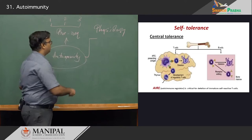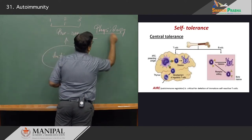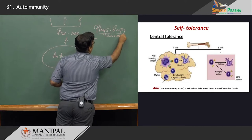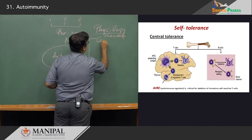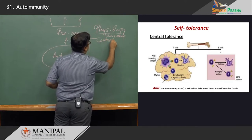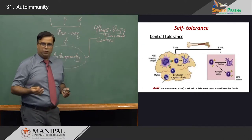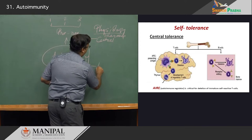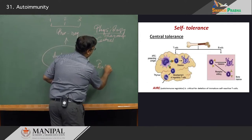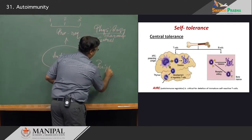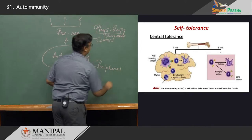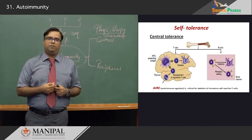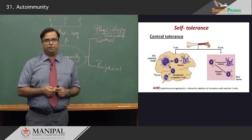Tolerance occurs in two important aspects. It happens in the central organs such as the thymus and bone marrow, where it is called central tolerance, and outside of that it occurs in other tissues, where it is called peripheral tolerance. Central tolerance develops in the central lymphoid organs; peripheral tolerance occurs in the periphery.